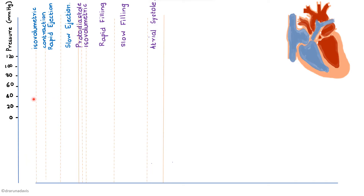On the y-axis, show the pressure from 0 to 120, because for the left ventricle the maximum pressure is around 120 mmHg. If right ventricular pressure changes are asked, the pressure values will change — the right ventricle's maximum is 25 mmHg. Here, because we are showing left ventricular pressure changes first, the maximum is 120.